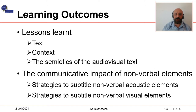First of all, I will try to draw on the lessons learnt in LO1, meaning I will briefly recap the notions of text, context and semiotics of the audiovisual text. This will allow me to introduce the question of the communicative impact of each of the semiotic elements composing an audiovisual text on the overall communication of the audiovisual text itself. With this in mind, I will concentrate on non-verbal elements, both acoustic and visual, and how to deal with them in the subtitling process in case they play an important informative role.